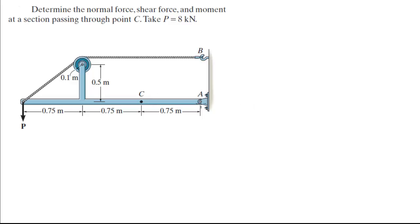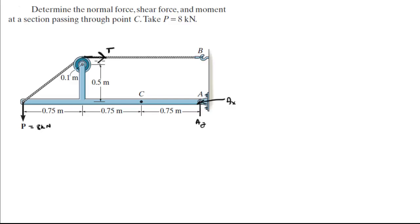As you can see, at A you have a pin, so you have a vertical and horizontal reaction — let's call it AY and AX. You can see here you have this force P, and they tell you P is equal to 8 kN. We also have this tension being developed by this cable — let's call it T for the tension.